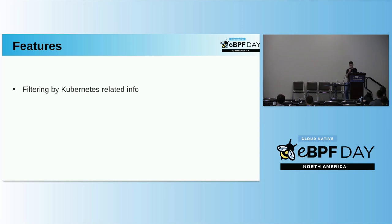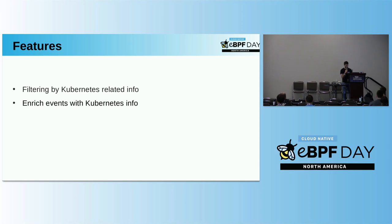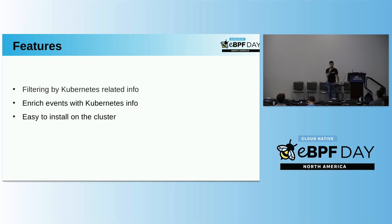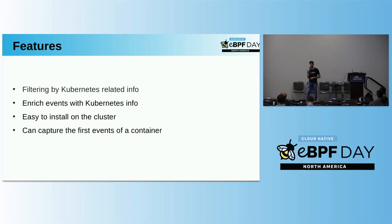The features of Inspector Gadget include filtering by Kubernetes — by namespace, by pods with specific labels — and enriching those events with Kubernetes information. One very important characteristic is that it is very simple to install. When you are trying to fix something in your cluster, you don't want to worry about a difficult setup. The idea is that you only have to run one command and that's it — because you're providing a tool to fix the problem, not create a new one.